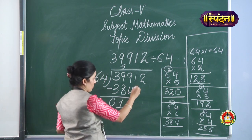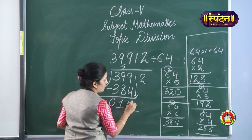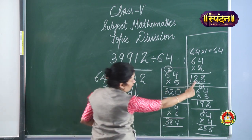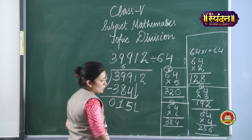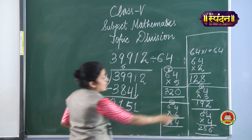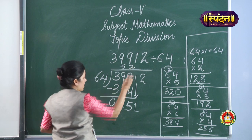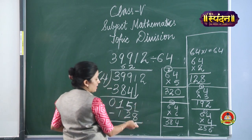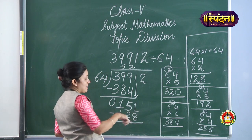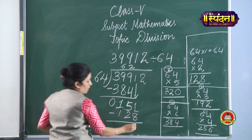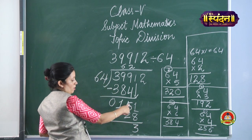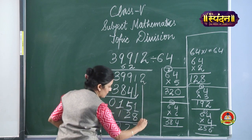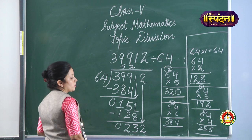Looking at 399: from our table, 64 sixes are 384. Write 6 in the quotient. Subtract: 9 minus 8 is 1, and 3 minus 3 is 0, leaving 15. Bring down the next digit 1, making 151. From the table, 64 twos are 128 and 64 threes are 192. Since 192 is larger than 151, we take 128. Write 2 in the quotient.